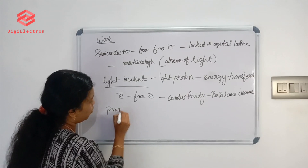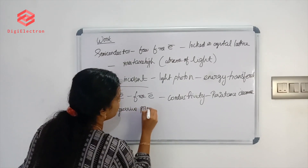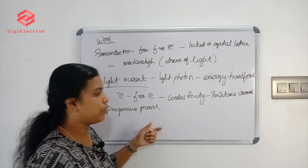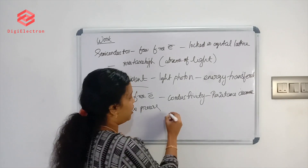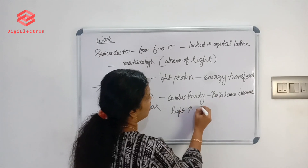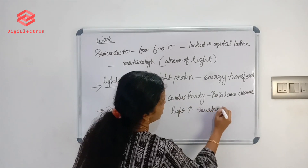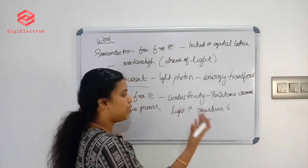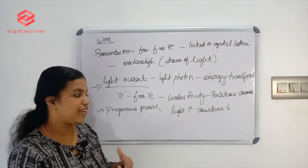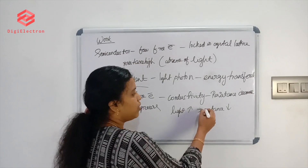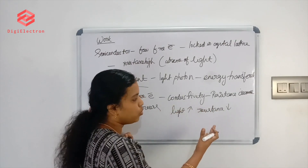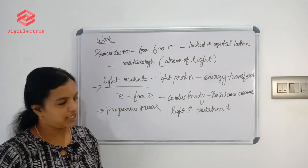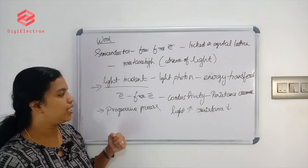This is a progressive process. When we increase light intensity, we decrease resistance. As light increases, more free electrons are generated, further reducing resistance.